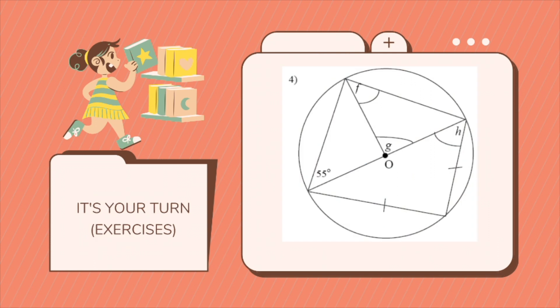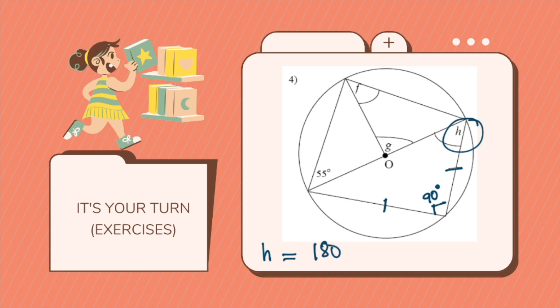Now let's try the following — can you find the value of angles F, G, and H? Since O is the center, the angle opposite the semicircle will always be 90 degrees. Since both sides are equal, H equals 180 minus 90, divided by 2, which gives 45 degrees. Hence H is 45 degrees.